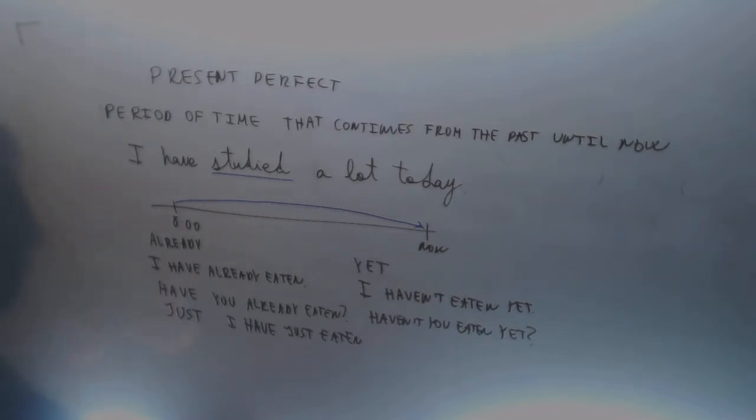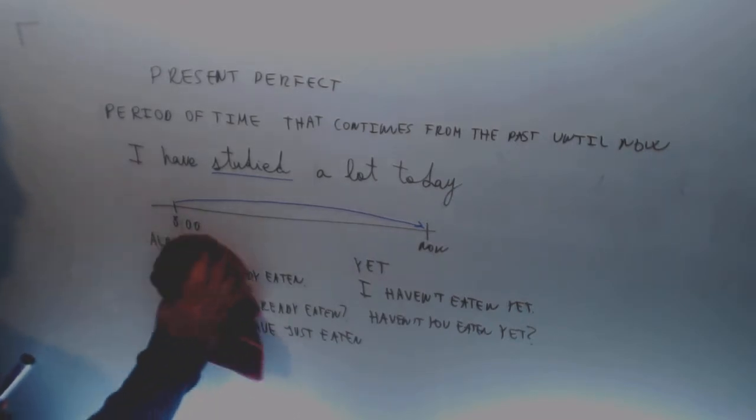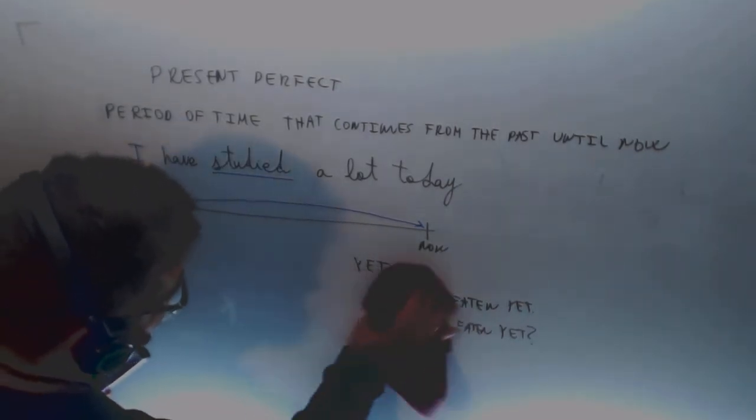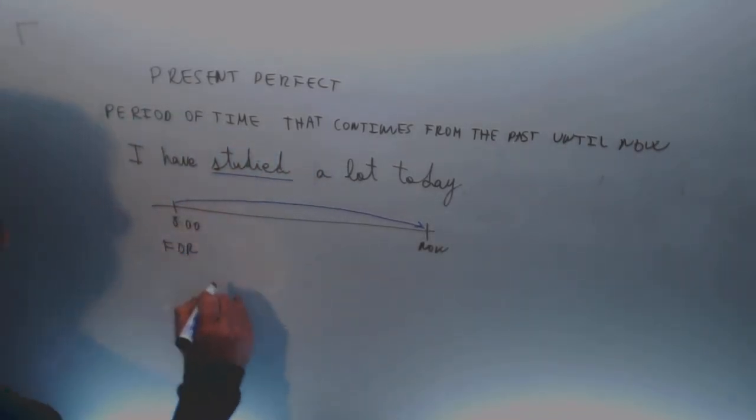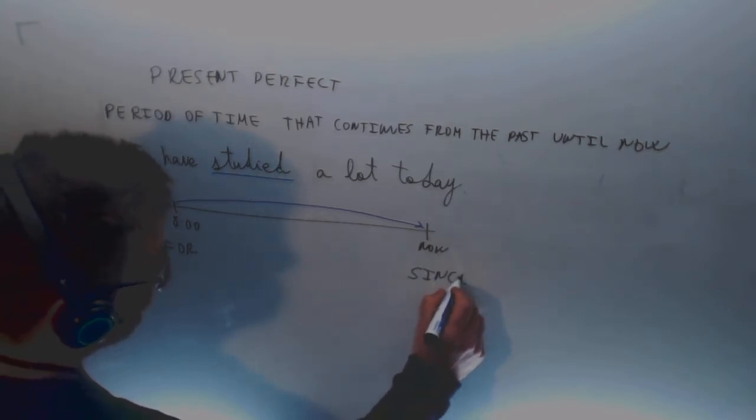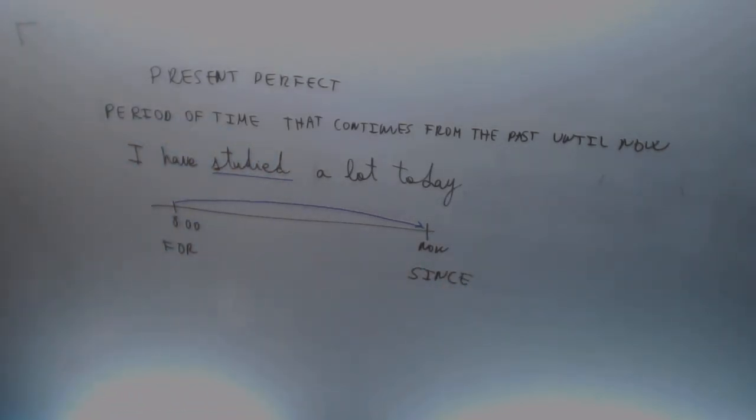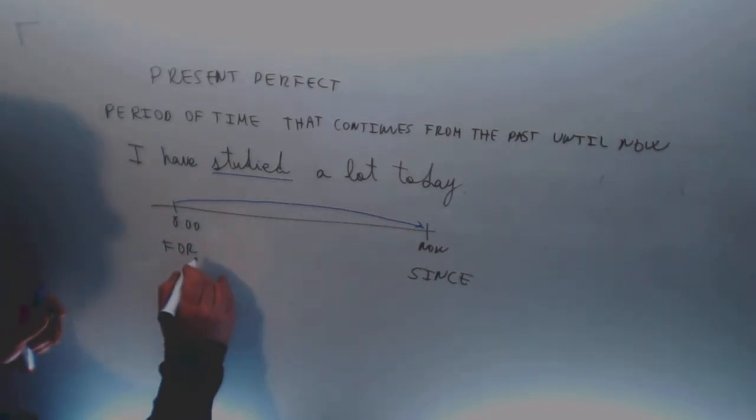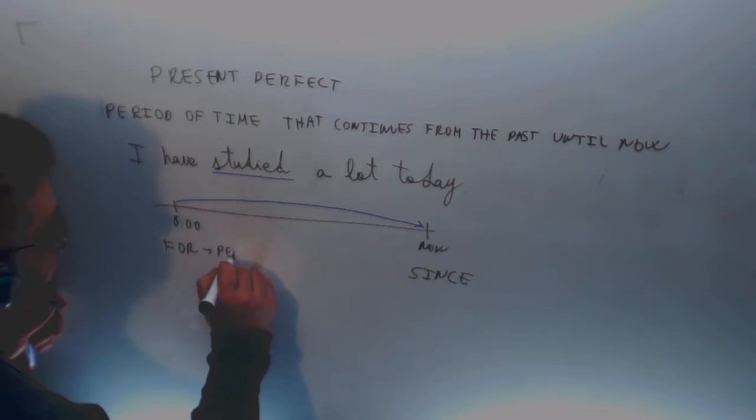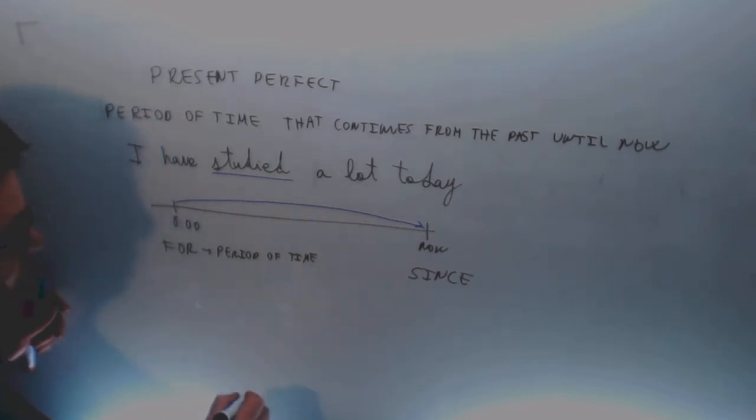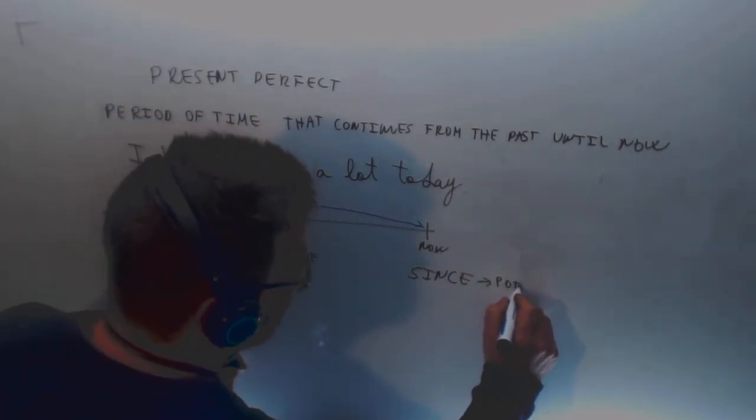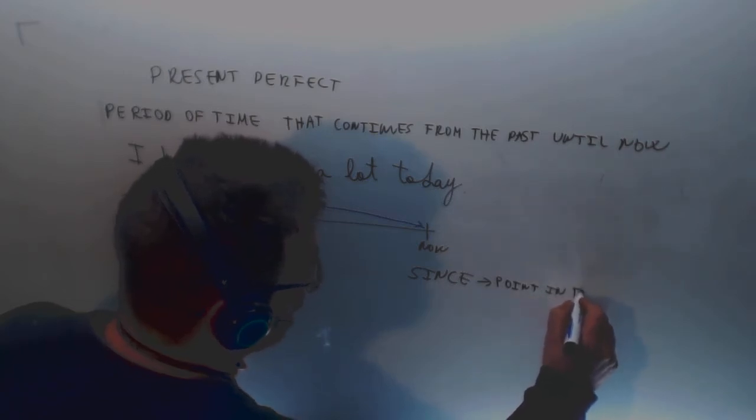Already, yet, and the other two words most used with the present perfect are 'for' and 'since.' Do you remember something about for and since? You use 'for' for a period of time, and you use 'since' for a point in time, a certain point in time.